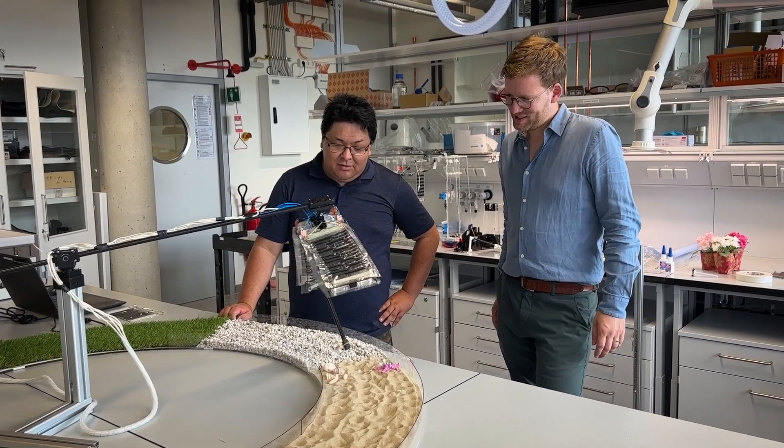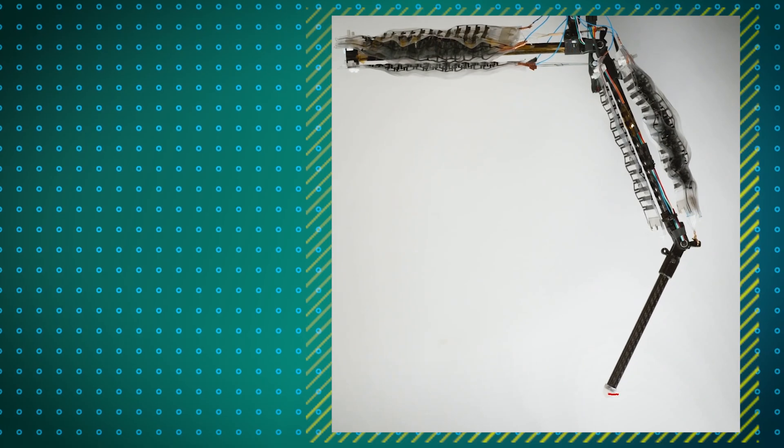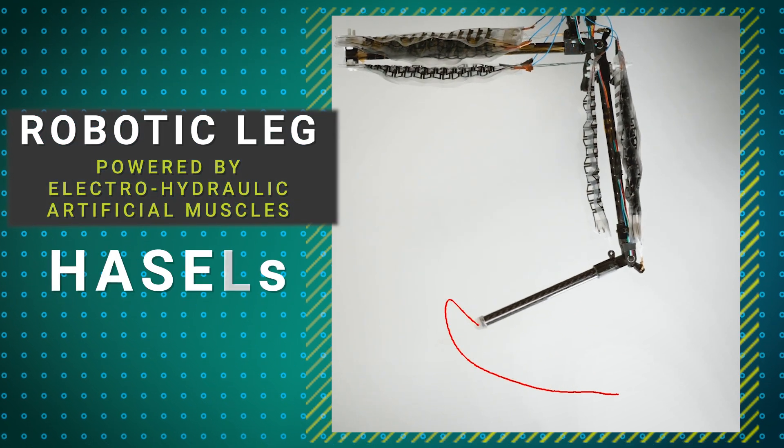Scientists at the Max Planck Institute for Intelligence Systems, together with a team at ETH Zurich, developed a robotic leg powered by electro-hydraulic artificial muscles known as hazels.